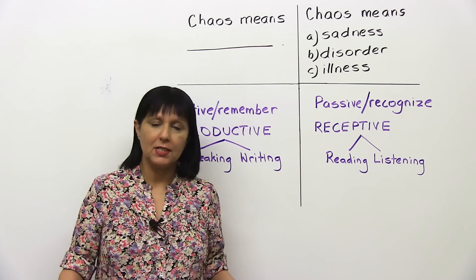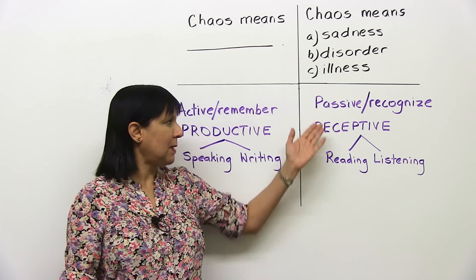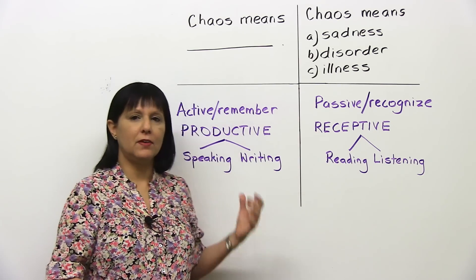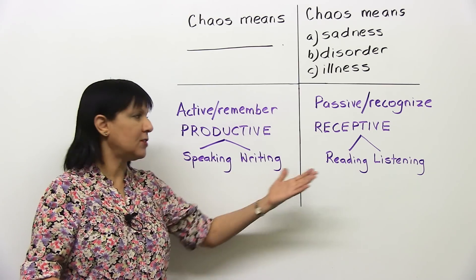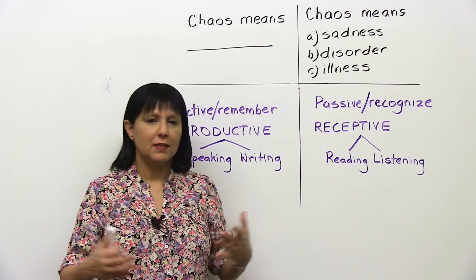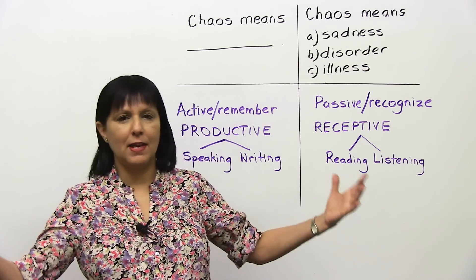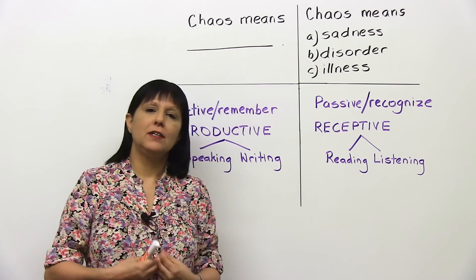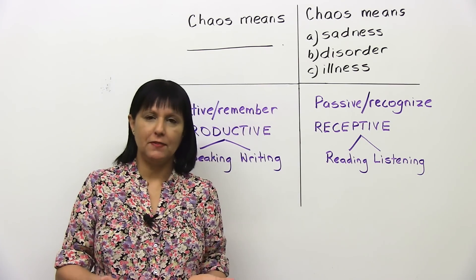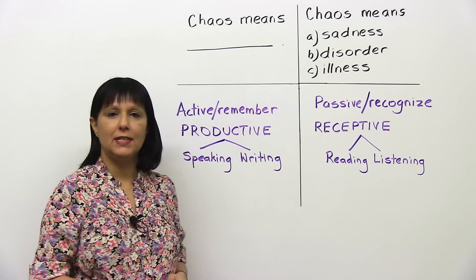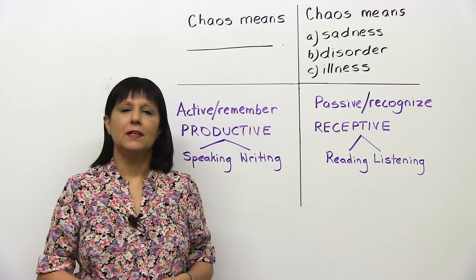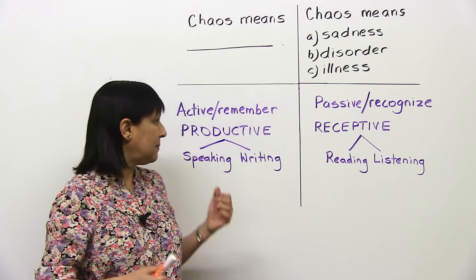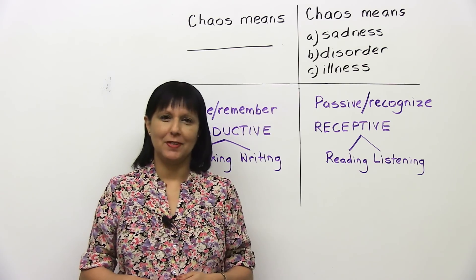In all languages, people's passive vocabulary is always much, much larger than their active vocabulary. That's why you can read hundreds of books and understand thousands and thousands of words, but you may not actually use those words yourself — even in your own language, and certainly in English. Next, I'll explain how to develop this active vocabulary.